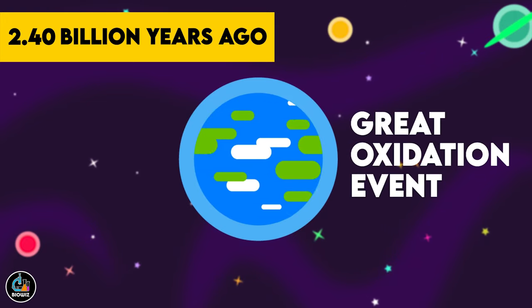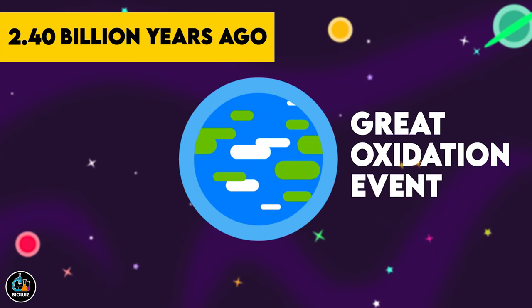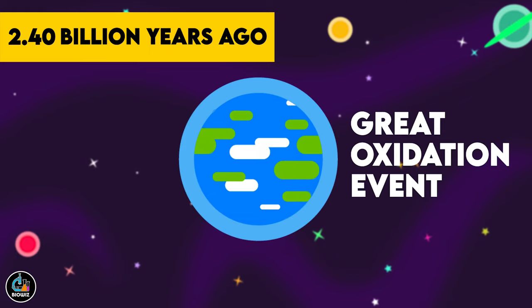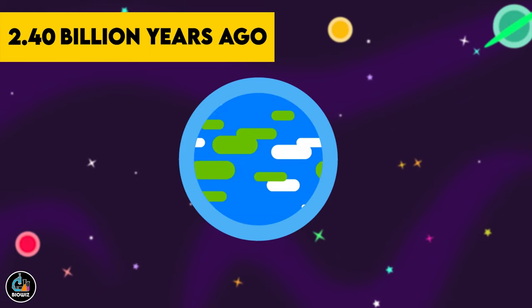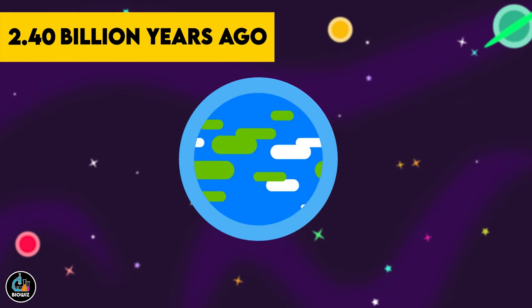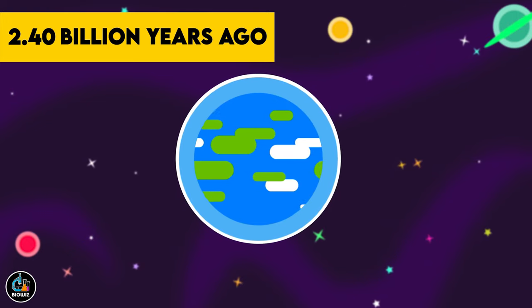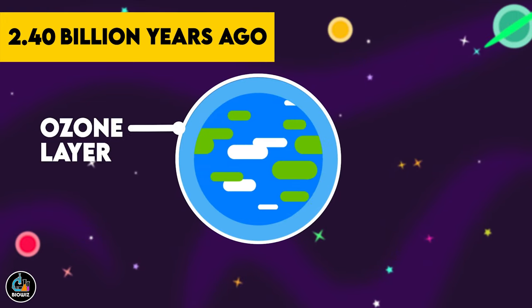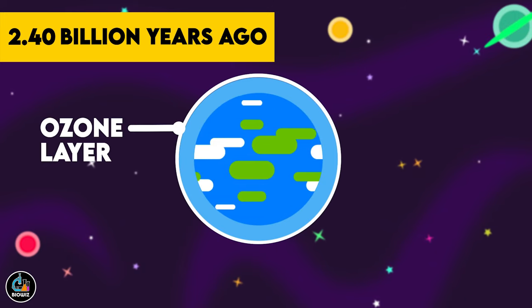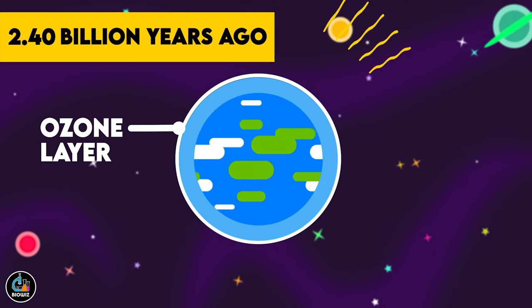This is referred to as the Great Oxidation Event, which occurred roughly around 2.4 billion years ago. The presence of oxygen in the atmosphere also resulted in the development of the ozone layer in the upper atmosphere, preventing the majority of harmful solar radiations from reaching the Earth and creating much more hospitable conditions.